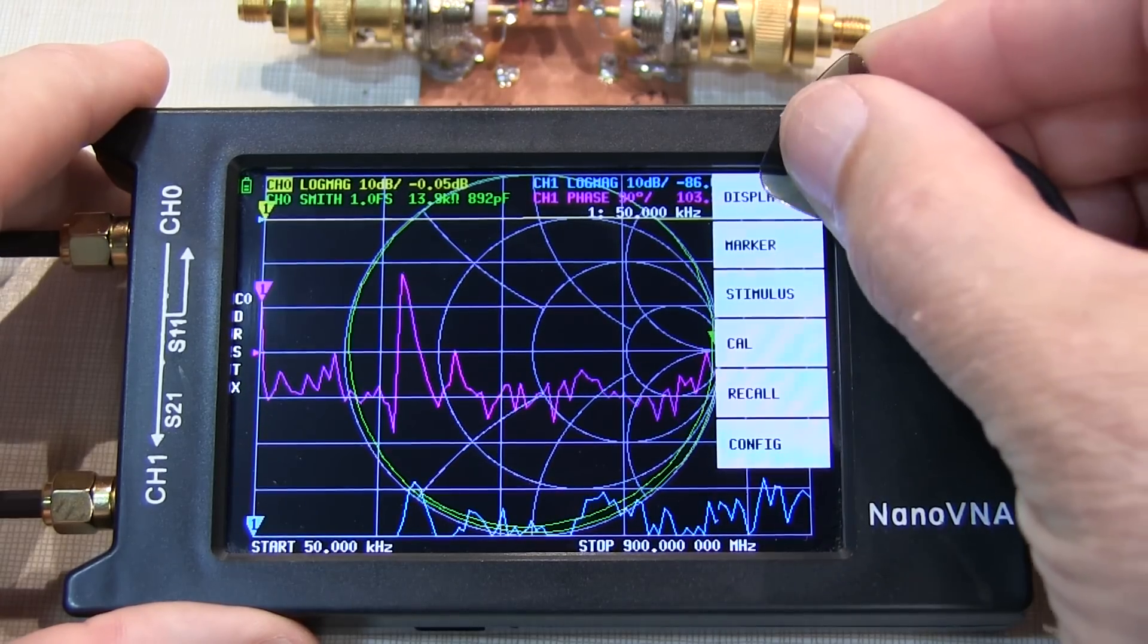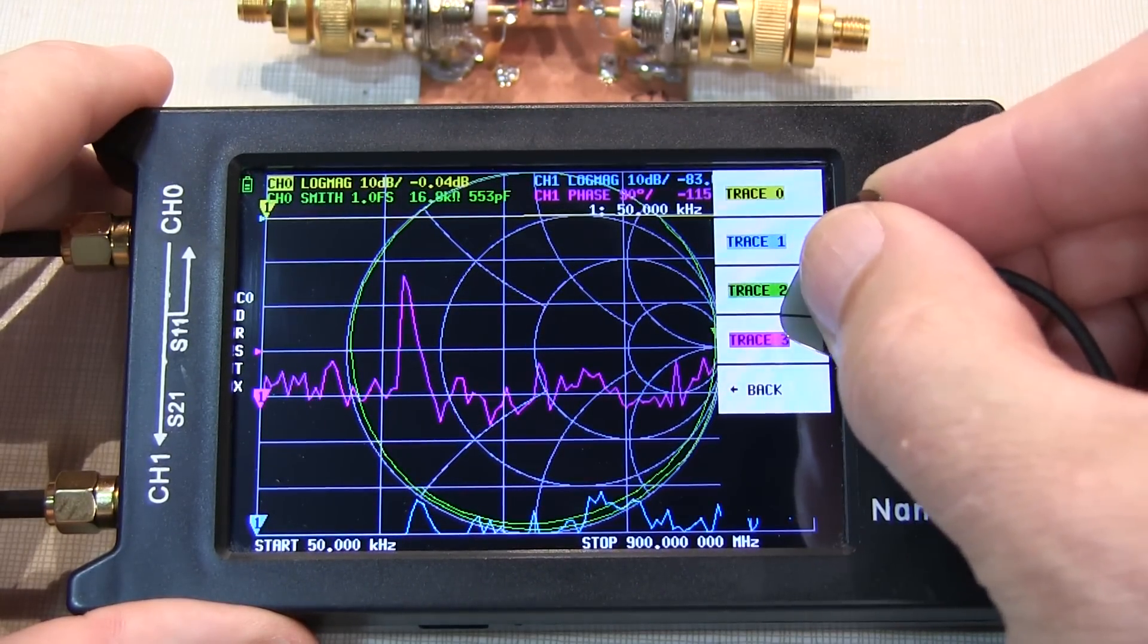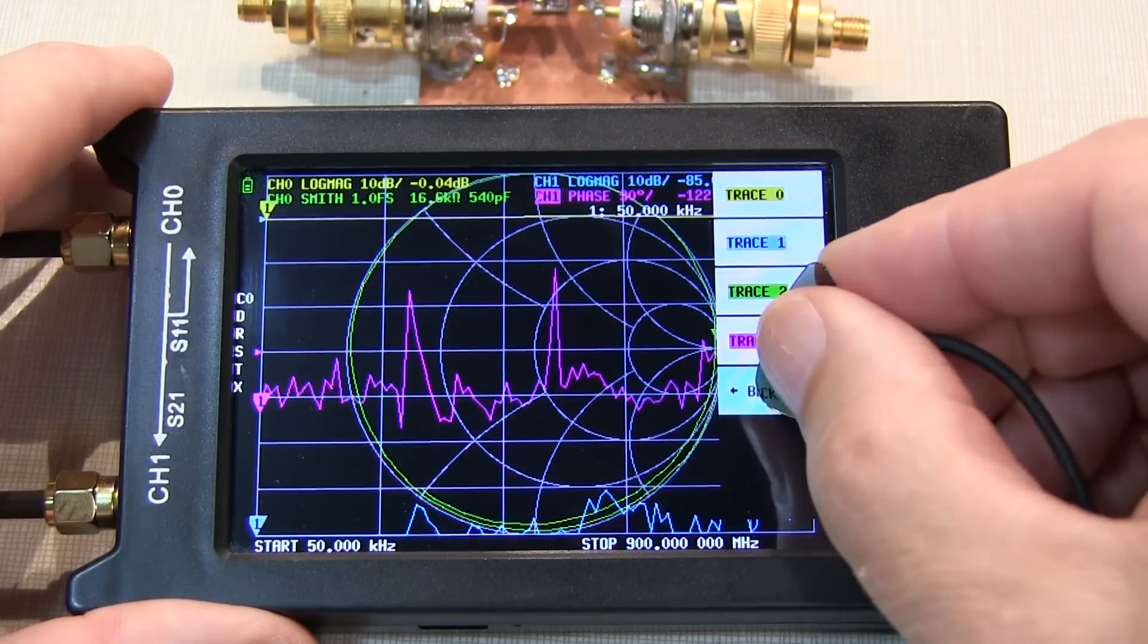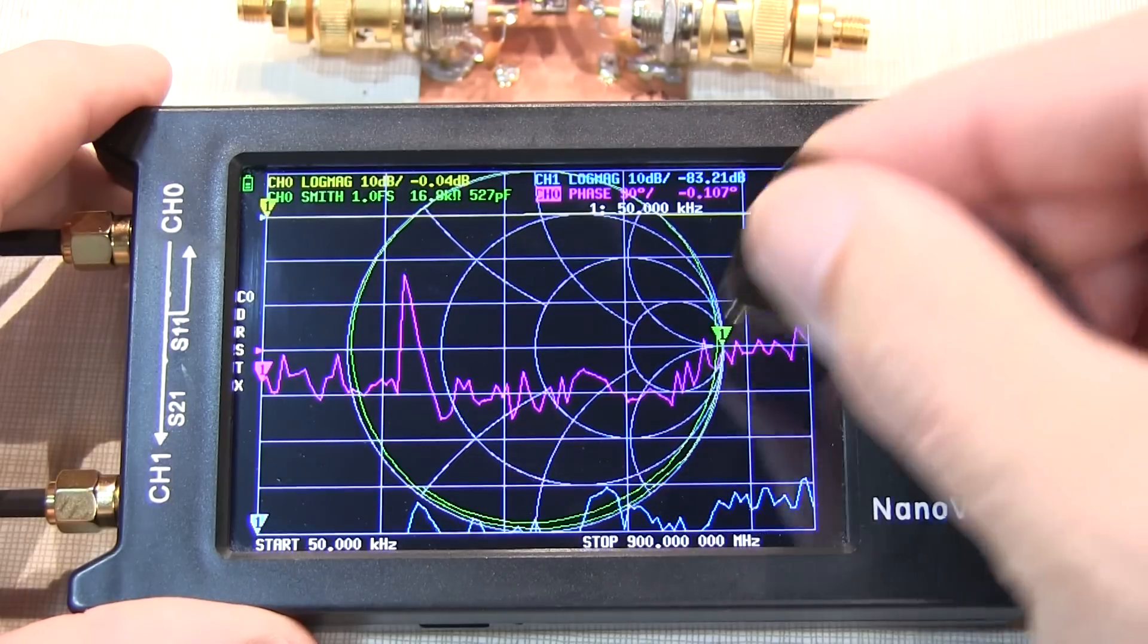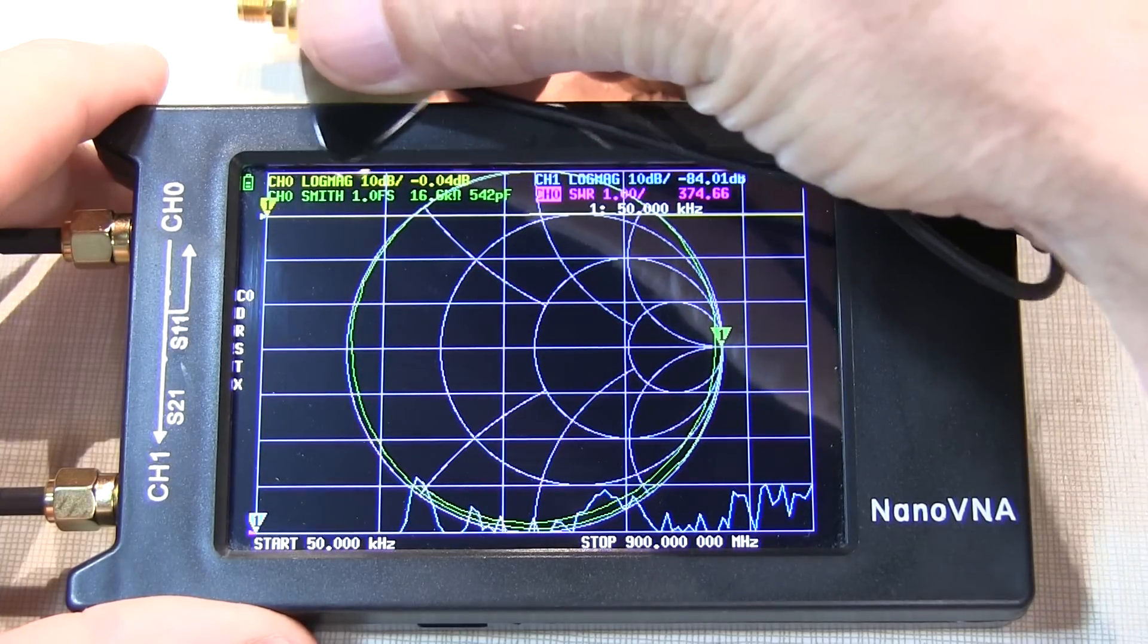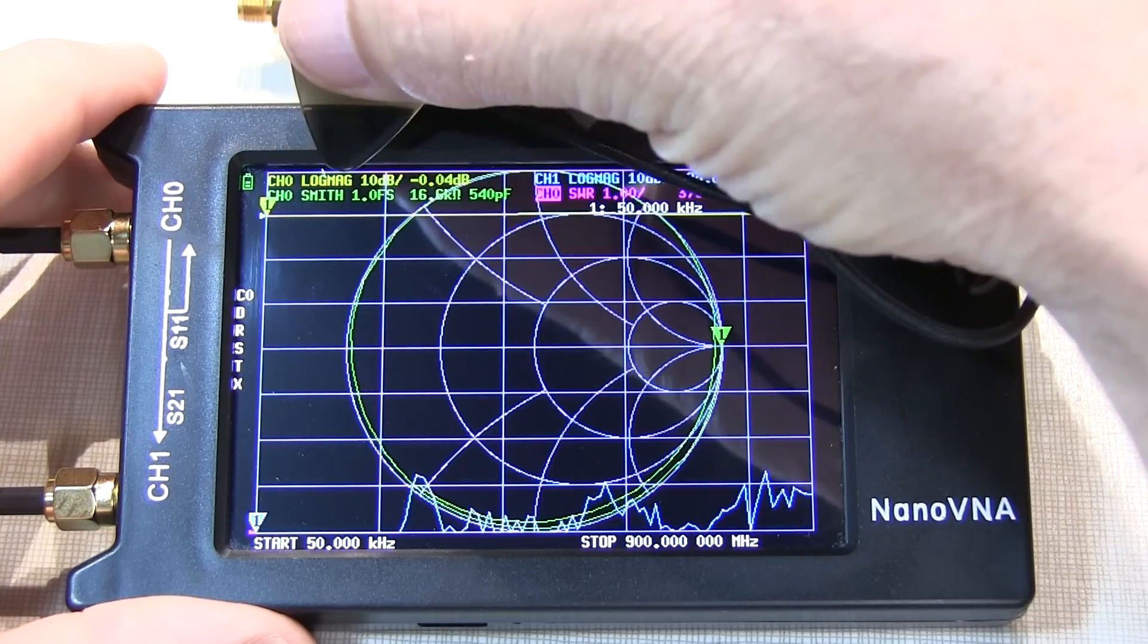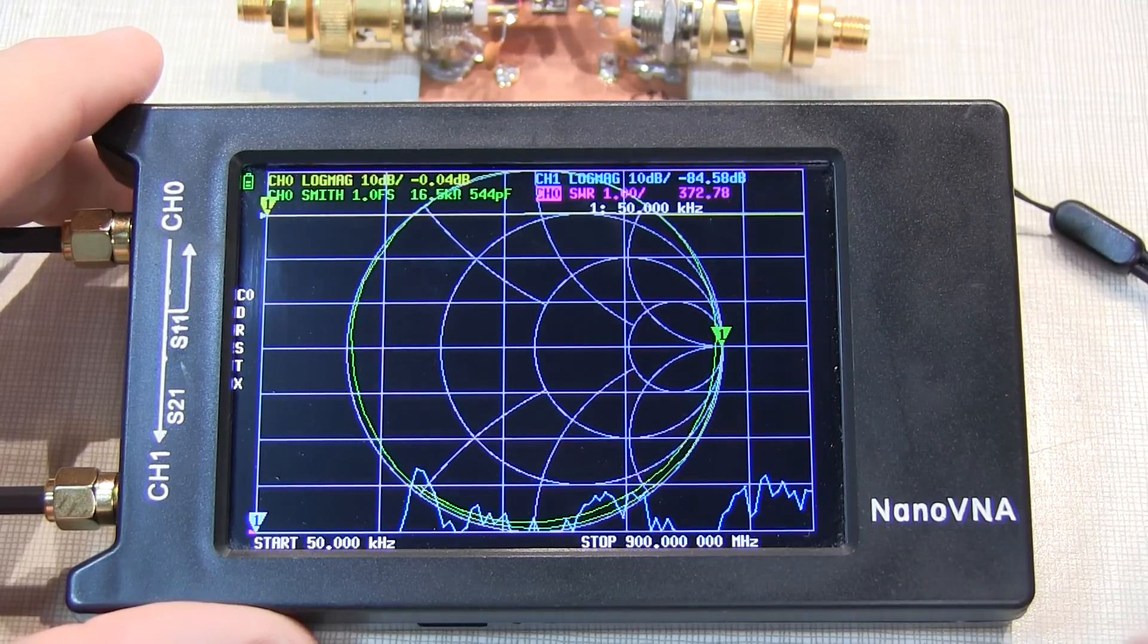I'll bring up the menu, go to display, and trace, and select the purple trace, and the inverse text tells us we're selected. We can go back, select channel, and put it on channel zero, and then go back to the menu, select format, and hit SWR. Now we have the log magnitude of S11, the log magnitude of S21, the Smith chart of the input reflection, and the SWR of the input.